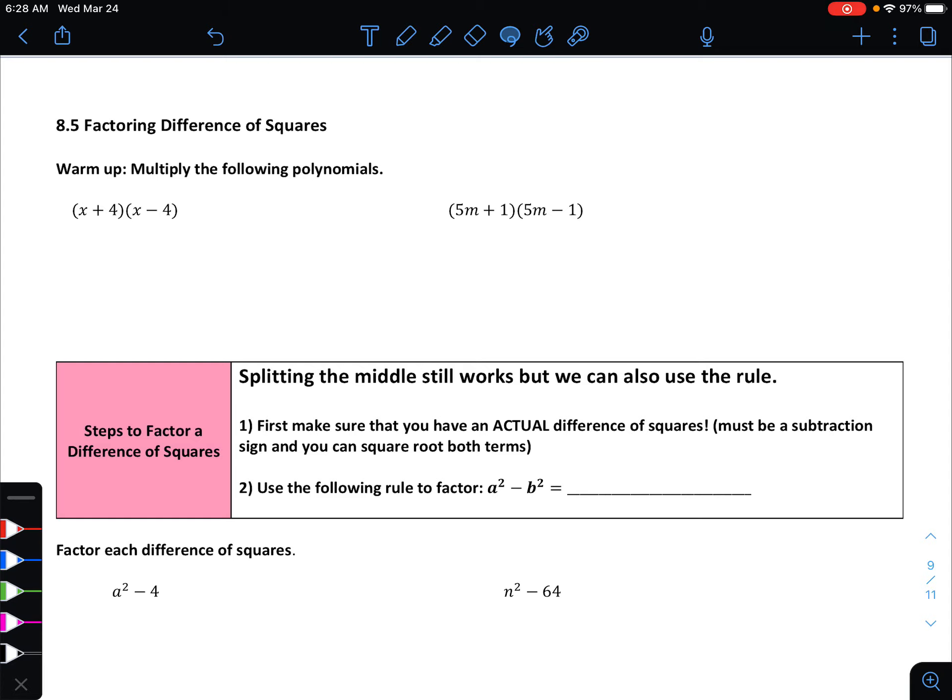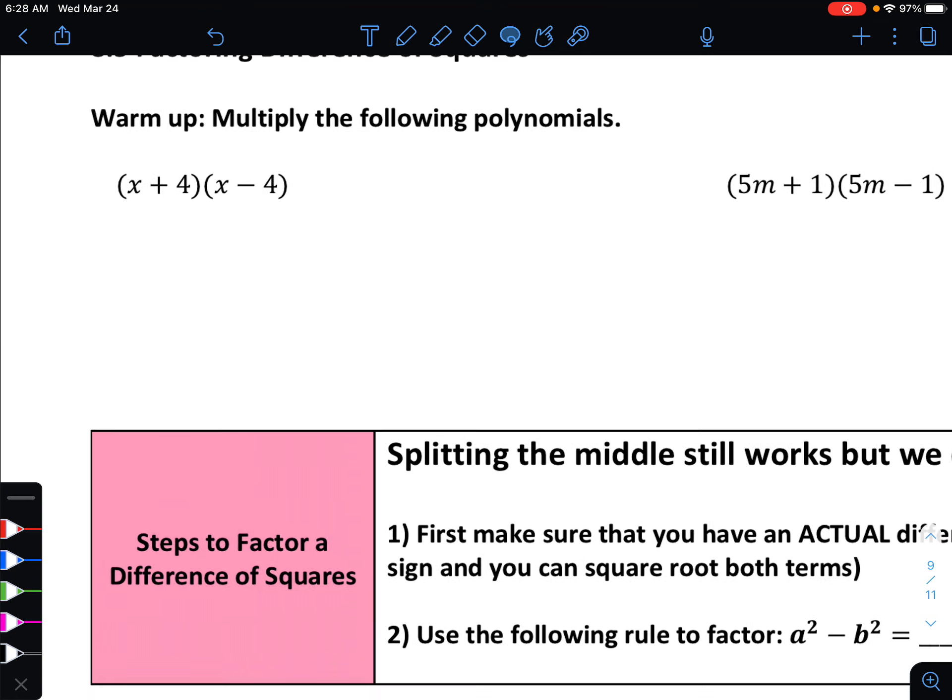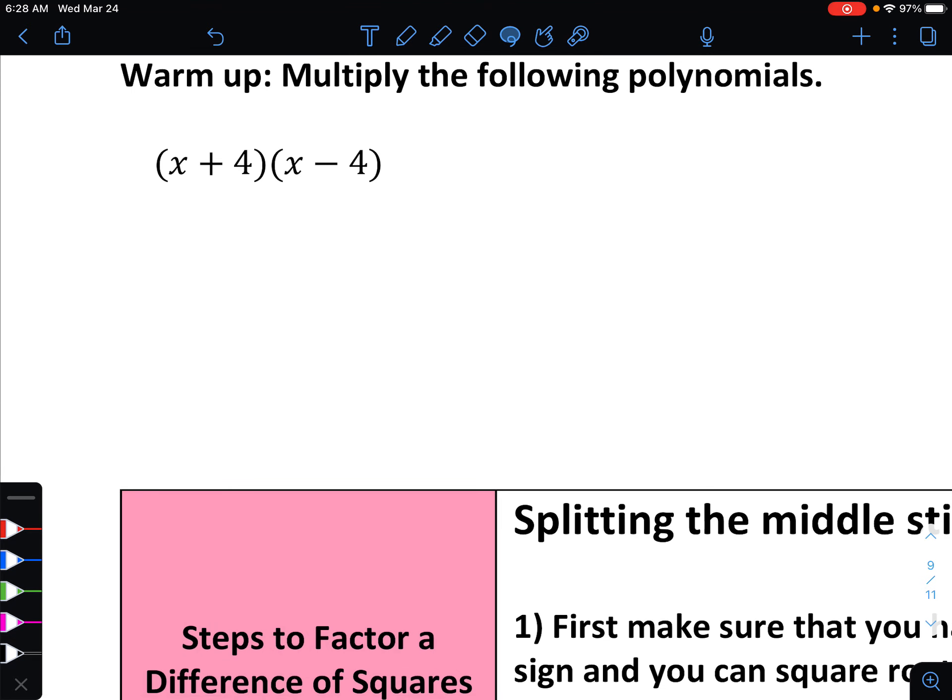Before we take a look at the actual factoring itself, let's see kind of where it comes from in this warm-up where we multiply the following polynomials together. Let's start with this one on the left, (x + 4)(x - 4). So as we multiply, remember that when you multiply two binomials, you distribute each of the terms in the first parentheses to the second.